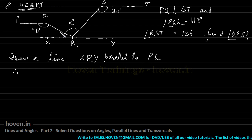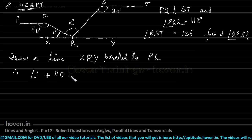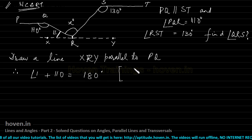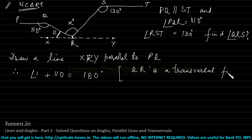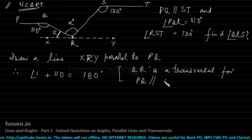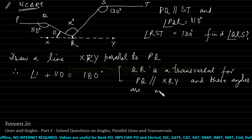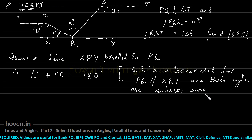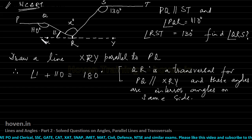Therefore, this angle I will mark as angle 1. Therefore angle 1 plus 110 should be equal to 180 degrees. The reason is that QR is a transversal for PQ parallel to xRy. And these angles are interior angles on same side of transversal. And interior angles on same side of transversal, they are always supplementary. They add to 180 degrees.